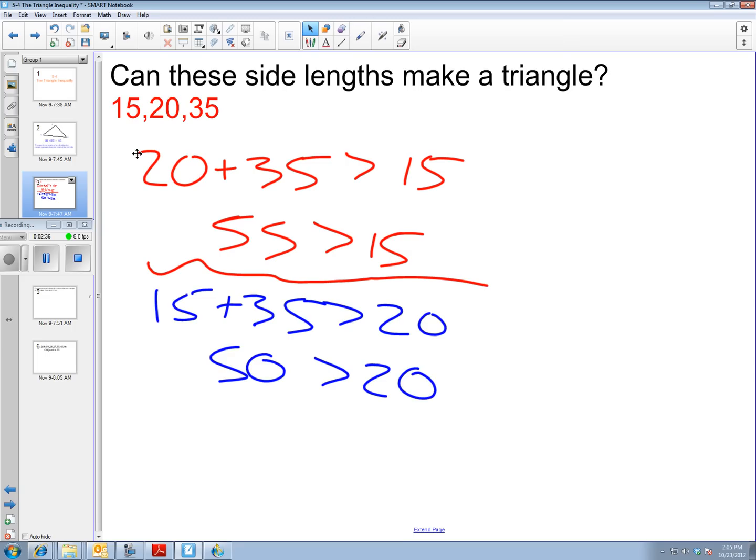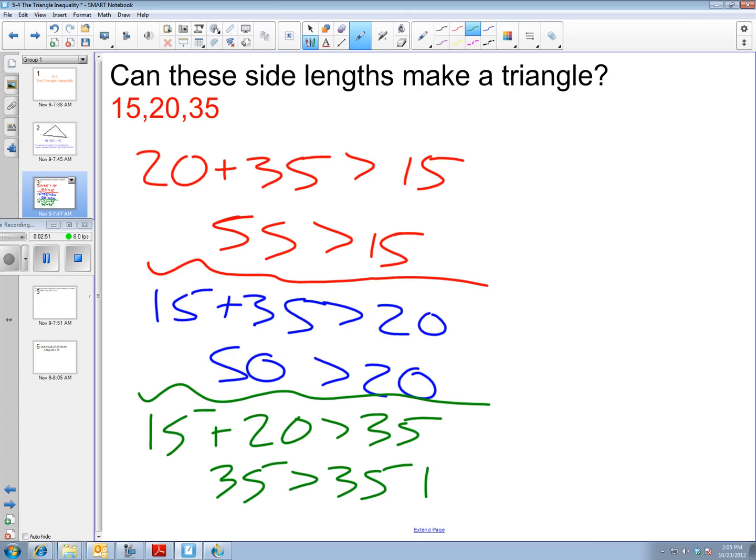We have one comparison left. 15 plus 20. Is that bigger than 35? 35. Bigger than 35. No. So, can these side lengths make a triangle? No.